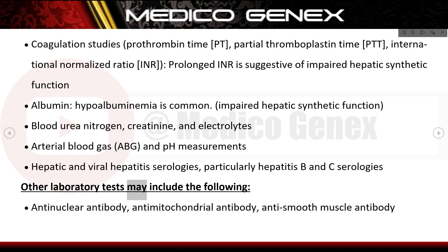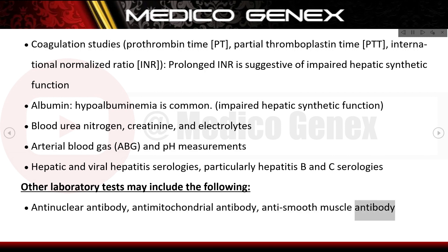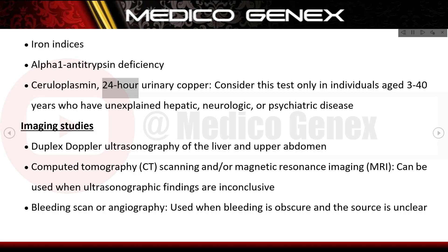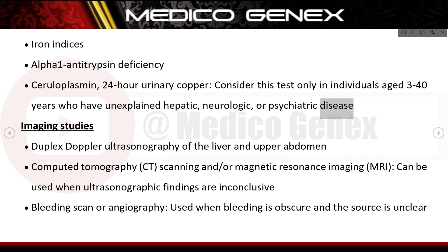Other laboratory tests may include antinuclear antibody, antimitochondrial antibody, anti-smooth muscle antibody, iron indices, alpha-1 antitrypsin deficiency, and ceruloplasmin with 24-hour urinary copper. Consider these tests only in individuals aged 3–40 years who have unexplained hepatic, neurologic, or psychiatric disease.